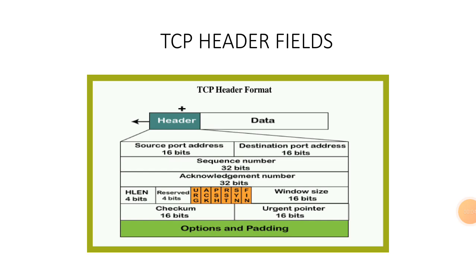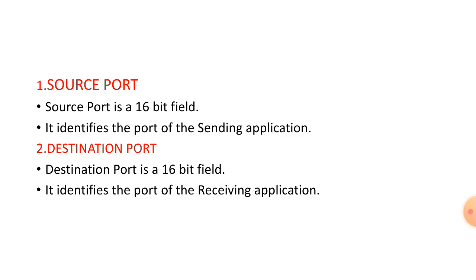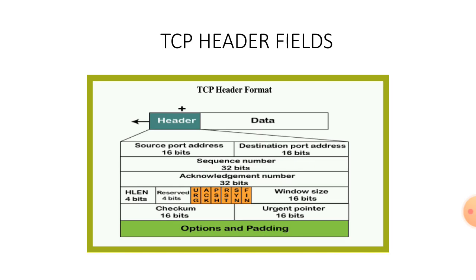We are going to see about TCP header fields. The TCP header fields consist of source port address, destination port address, sequence number, acknowledgement number, header length, reserved bits, window size, checksum, and urgent pointer.